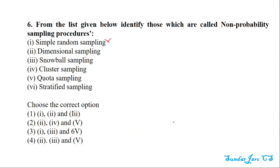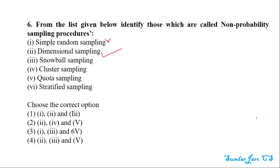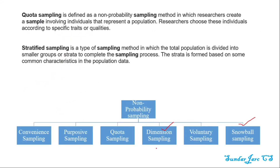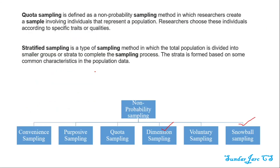Dimensional sampling is non-probability. Snowball sampling is also non-probability. Cluster sampling is not in the non-probability list, so cluster sampling is excluded. Quota sampling is confirmed as non-probability.